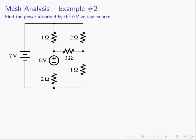Let's do another example with a more complicated circuit — we'd like to find the power absorbed by the 6-volt source. Step one: determine the number of mesh. Looking at the circuit like a window pane, we see there are three panes, so M equals 3. Step two: define the three mesh currents consistently. We define I1, I2, and I3, and notice they are all drawn clockwise — consistent, so everything will work out.